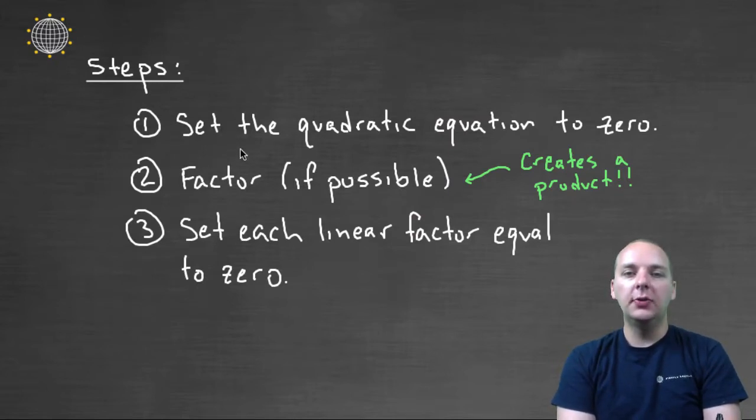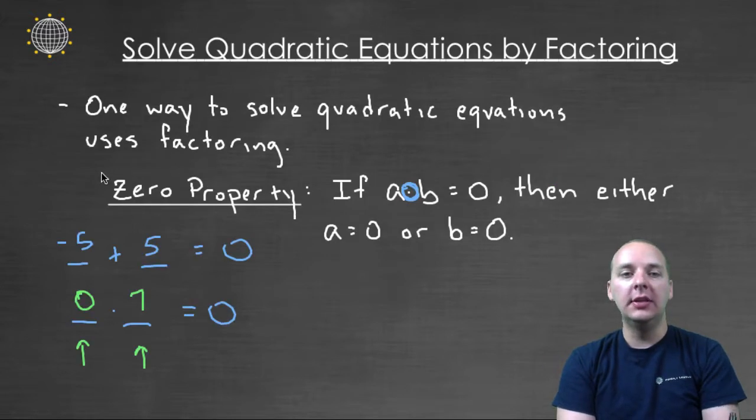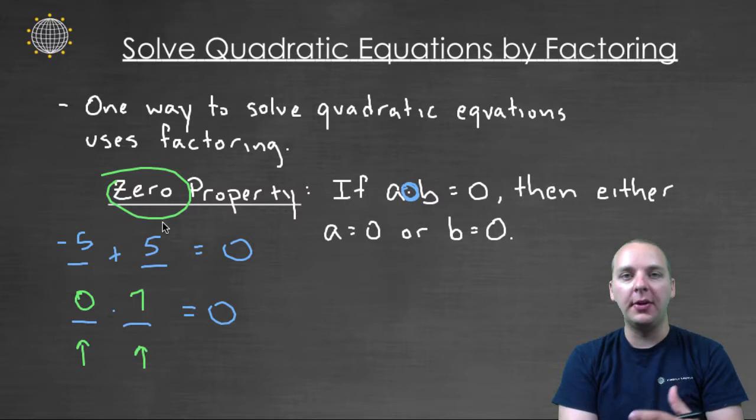So what we're going to do is first of all, make sure our quadratic equation is set equal to zero. It has to be equal to zero in order for us to use this zero property. There's no such thing as a six property or a seven property. It's only for zero.